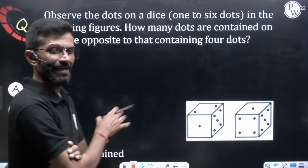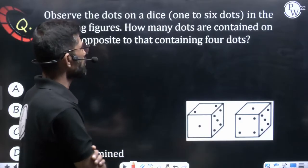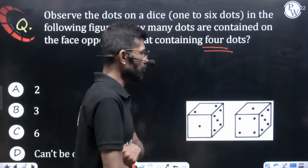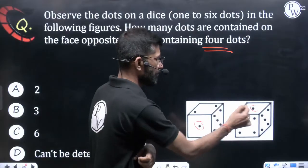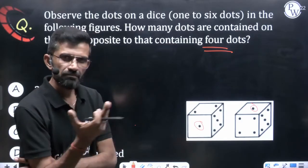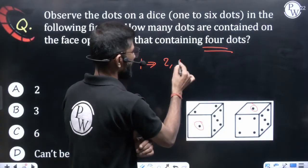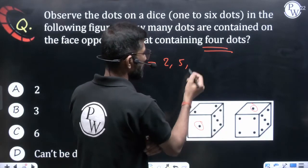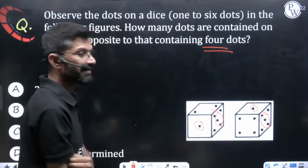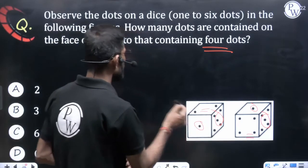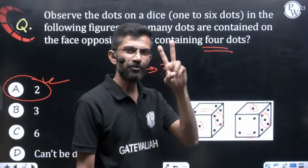Question: Observe the dots on a dice in the following figures. How many dots are contained on the face opposite the face containing 4 dots? Looking at the two views: both views have 1 and 5 common — two numbers are common — so by Rule 2, the uncommon numbers 4 and 2 are opposite to each other. Since they are asking about 4 dots, the opposite face has 2 dots. The answer is 2.